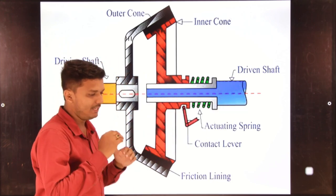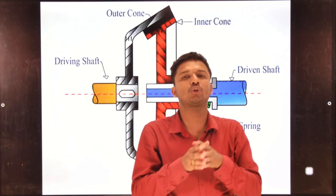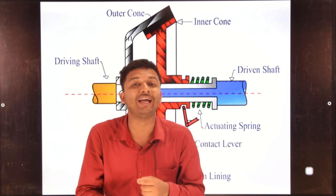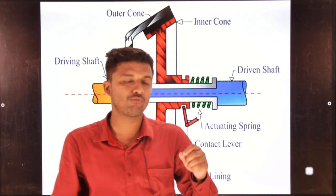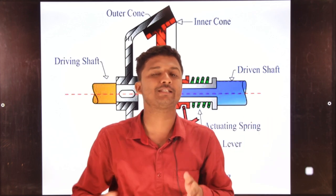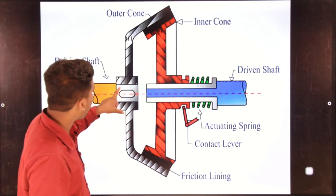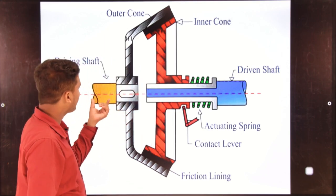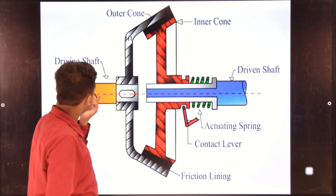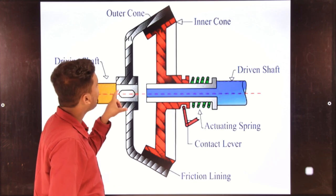Here there is a driving shaft. Previously we studied about the clutch plate that connected with the flywheel directly — and from the flywheel the torque is transmitted. But here, the outer cone is connected with the engine. The torque from the engine input shaft first comes to the outer cone.